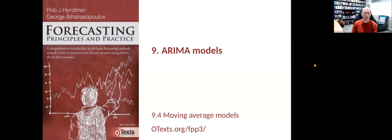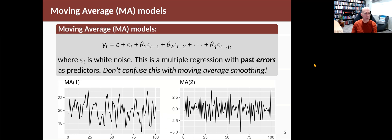We're now going to look at a different type of model called a moving average model. This is the other half of ARIMA models, if you like.